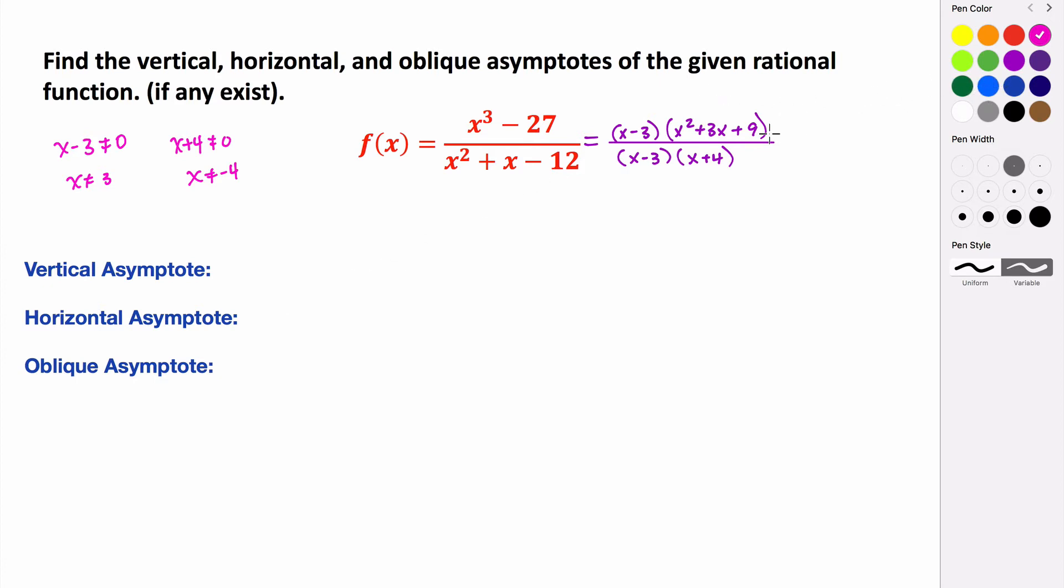But we do know that at 3, we don't get a vertical asymptote. Because if we look, we can see that those factors actually cancel. So rather than giving us a vertical asymptote, this is going to give us a hole in our graph. And then we will have a vertical asymptote at x equals negative 4. So that's a vertical asymptote. And then we have a hole at x equals 3.